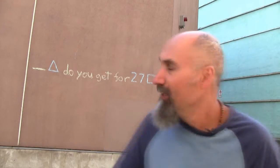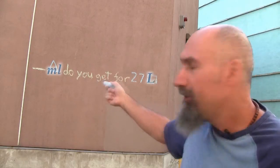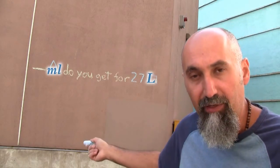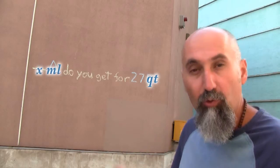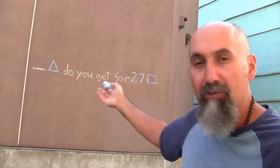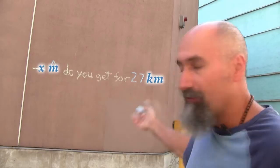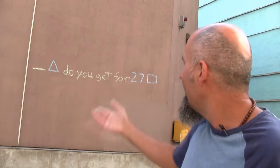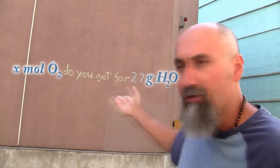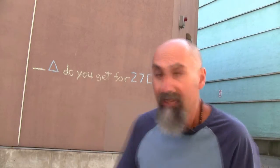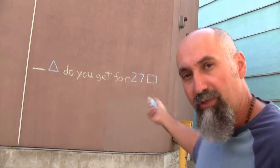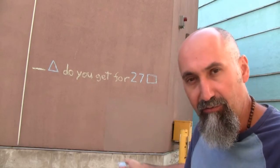Blue squares and blue triangles can be anything you want. This could be asking how many milliliters are in 27 liters of fluid, how many meters are in 27 kilometers or 27 miles, how many moles of oxygen are in 27 grams of water, or how much you're going to get paid for 27 hours of work. That's what unit conversion is — going from one system to another.